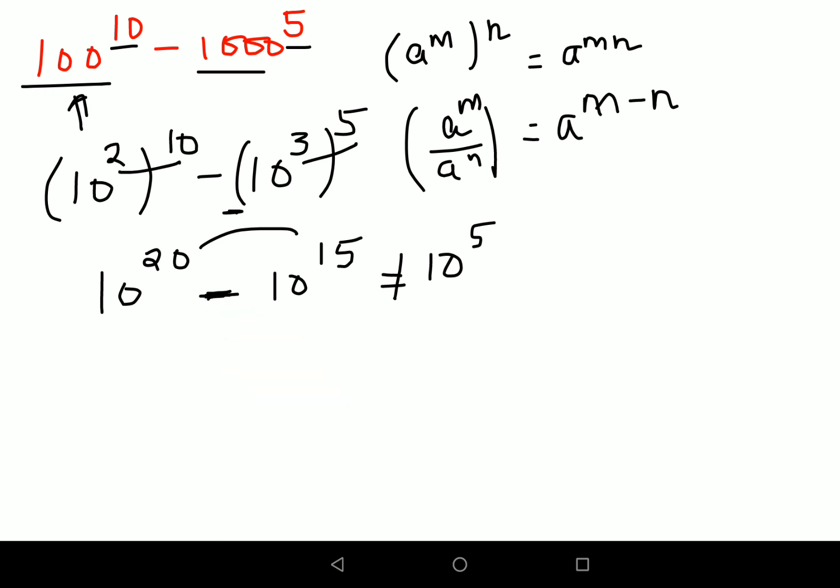So here what we can do is we will take whatever is the smallest index, so in this case we know it is 15, we will take 10 raised to 15 common. So we are left with 10 raised to 5 minus 1. Now why did I take 10 raised to 5? Because once you take 15 away from 20, you are just left with 5.